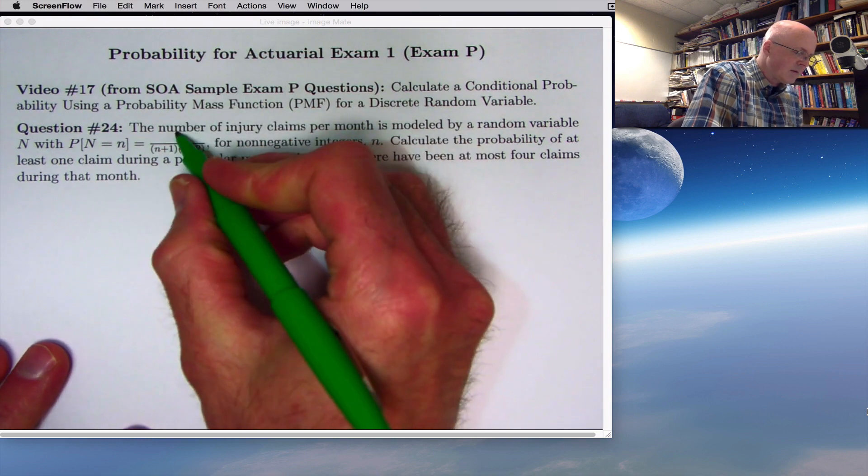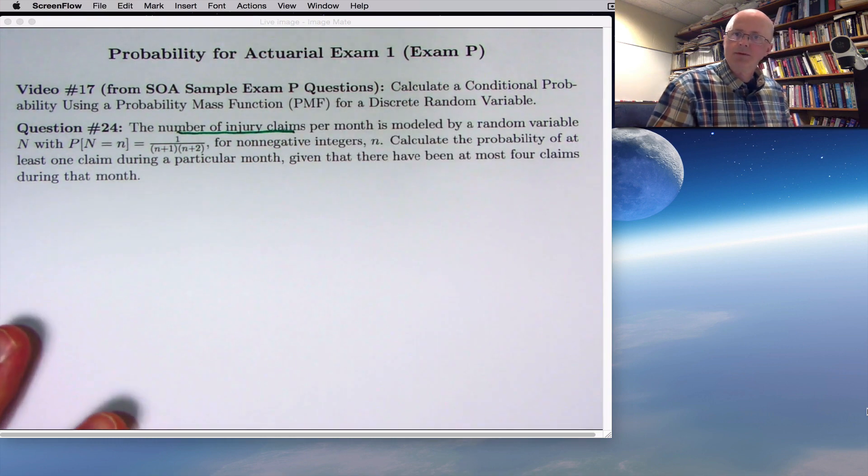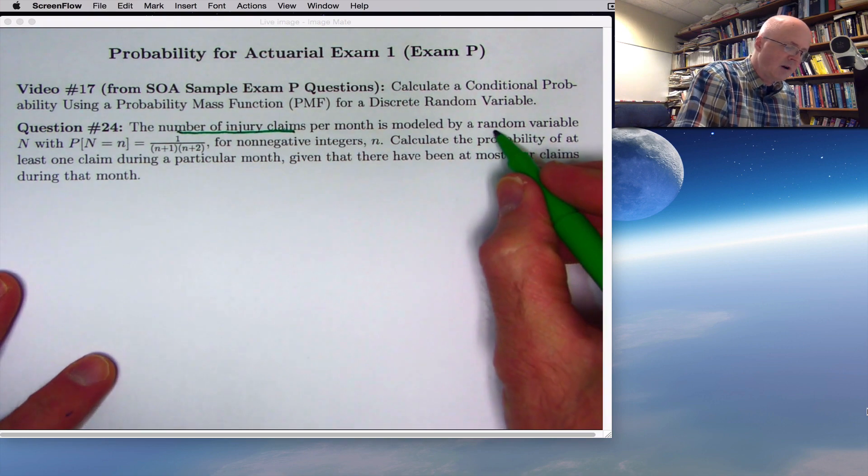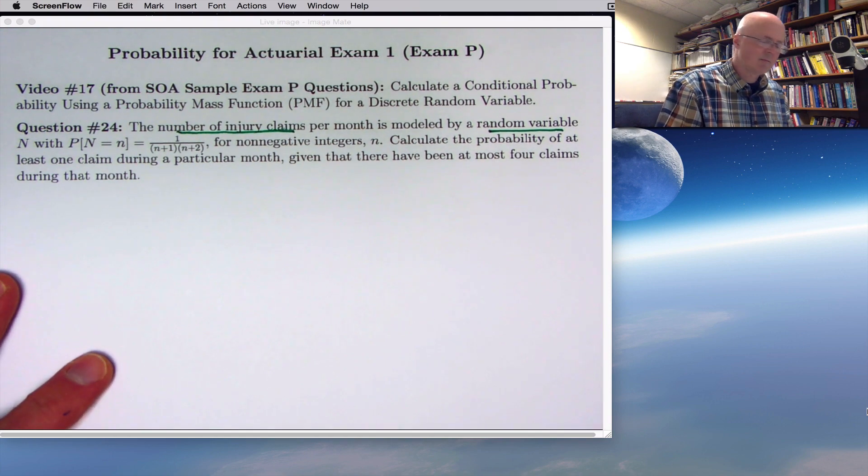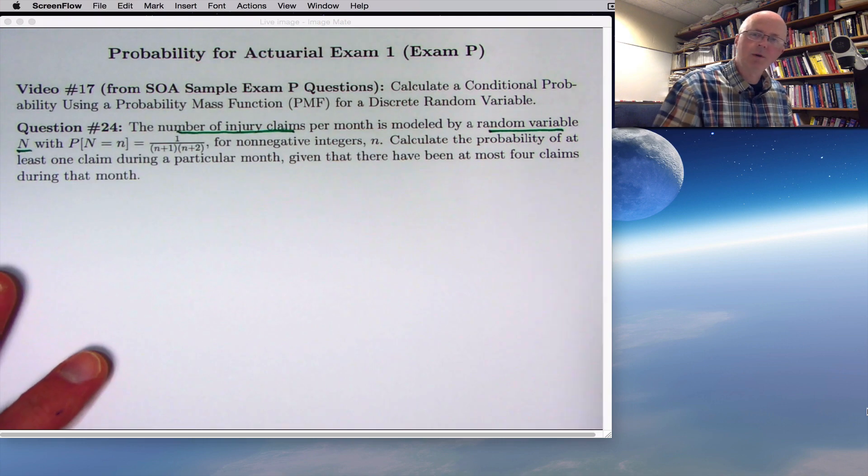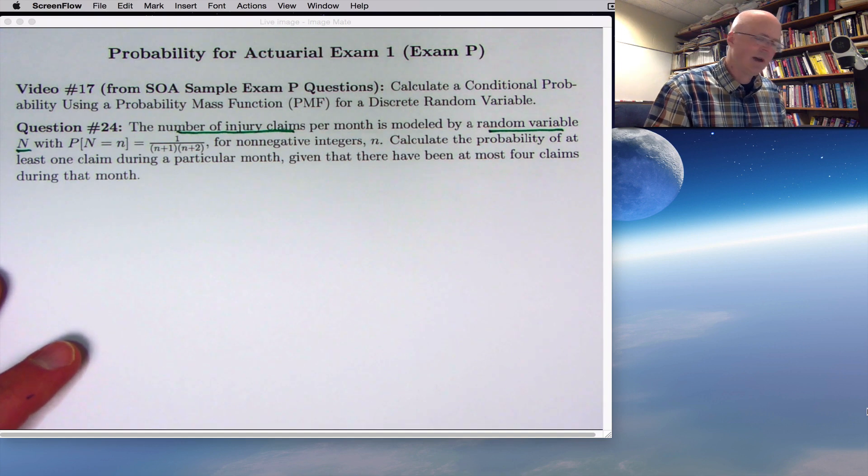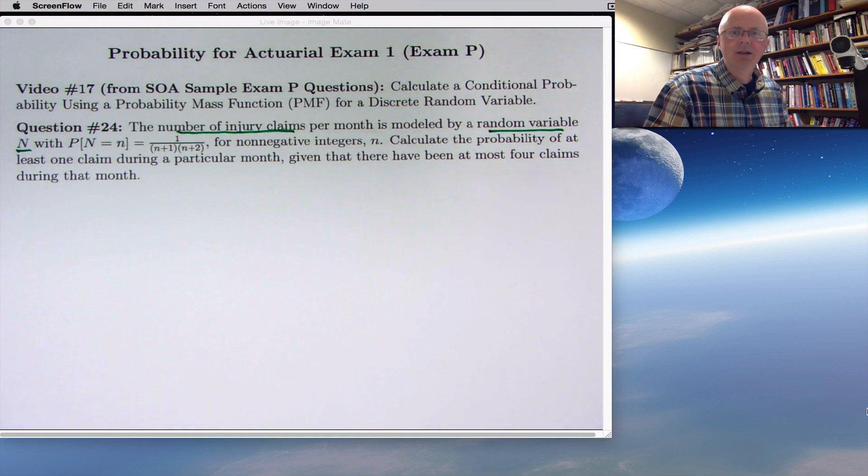We've got the number of injury claims per month modeled by something called a random variable. Random variables almost always are denoted by capital letters. That's the first thing to know. Use capital letters for random variables. Now, what is a random variable? It's got a technical definition that's a bit difficult to describe. We'll be satisfied with a very intuitive definition. Random variables are just quantities whose values are determined by chance.